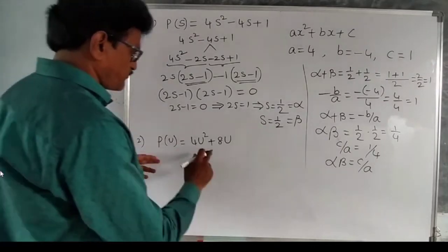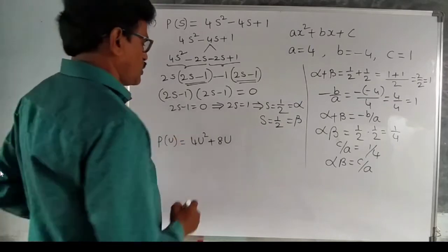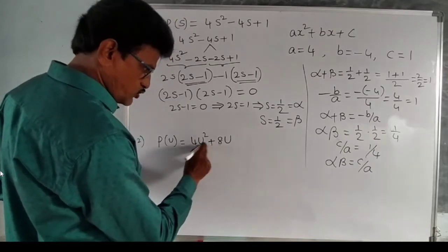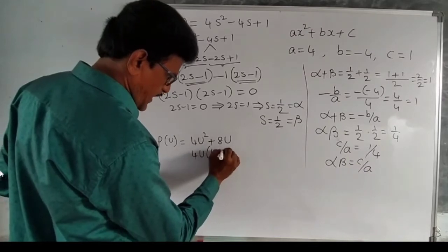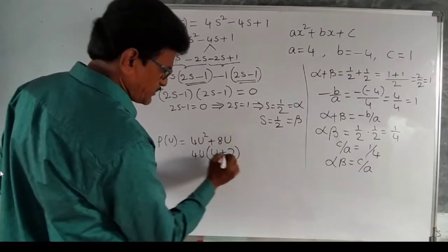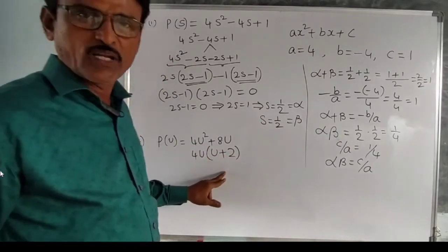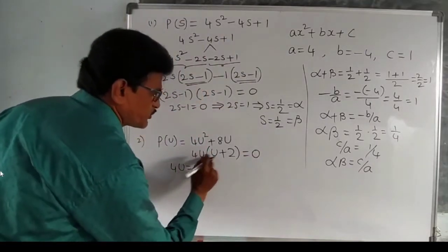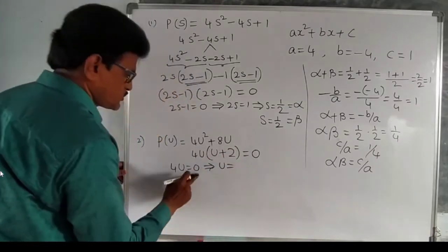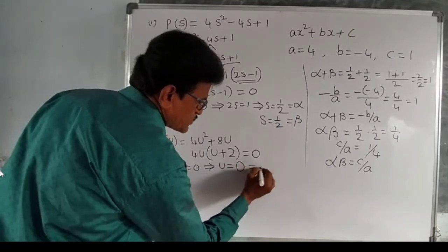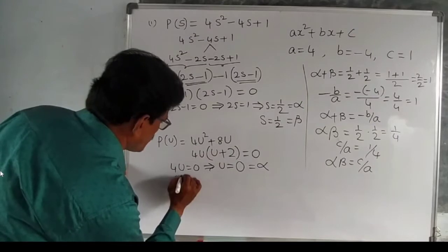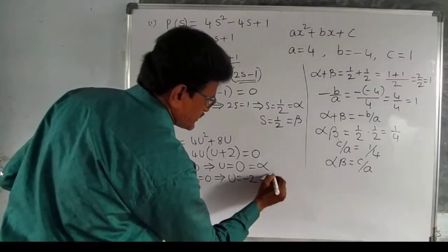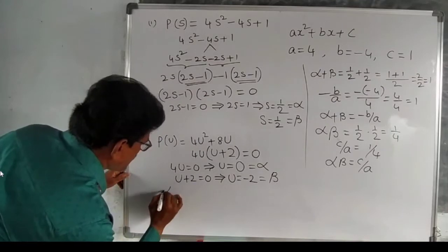Next example: p(u) = 4u² + 8u. Factorize by taking 4u common: 4u(u + 2). These are the two factors. Setting each factor to zero: 4u = 0 gives u = 0, take this as alpha; u + 2 = 0 gives u = minus 2, take this as beta.